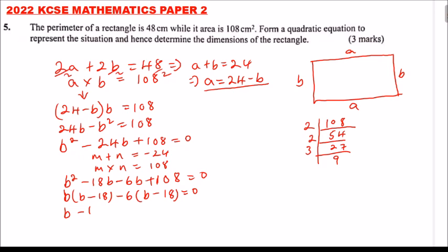So we say b minus 6, these are the factors, and b minus 18, close the bracket, equals 0. Implying b is either 6 or 18. And now that we have obtained the value of b, can we get the value of a? Already the value of a, we had a equals 24 minus b.